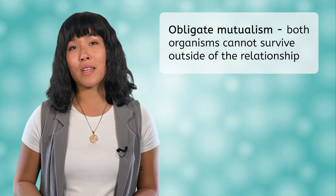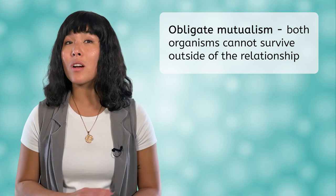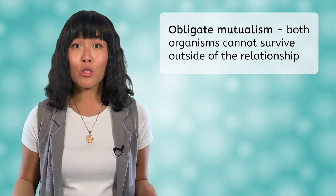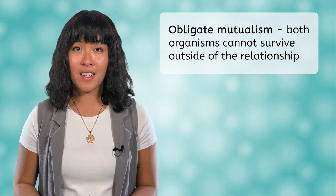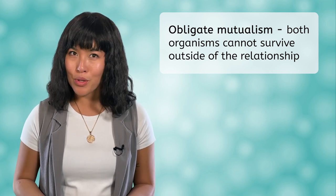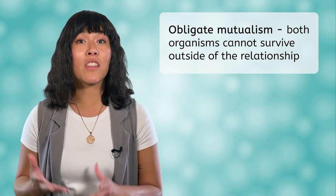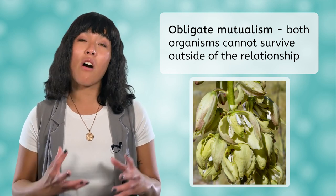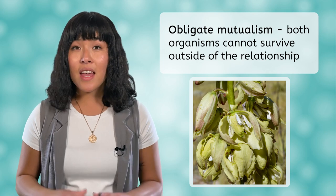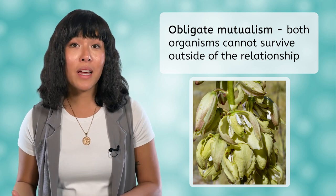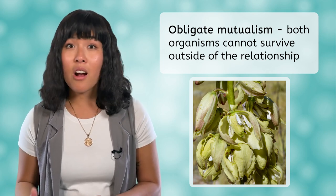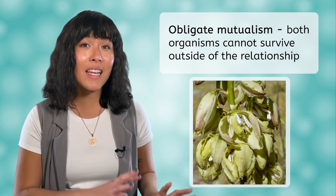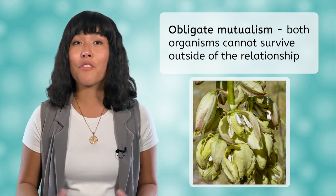Obligate mutualism is when both organisms are completely reliant on each other — neither organism could survive without the other. An example is the relationship between the yucca plant and the moth. The yucca plant relies on the moth for pollination, and the moth relies on the yucca plant because its blossoms are a safe place to lay eggs and the larvae eat the yucca plant's seeds for nourishment.